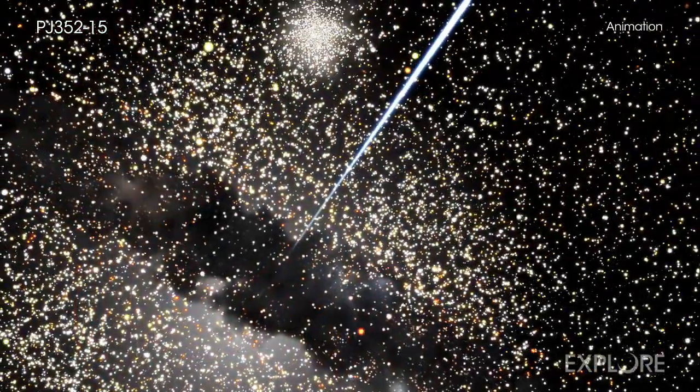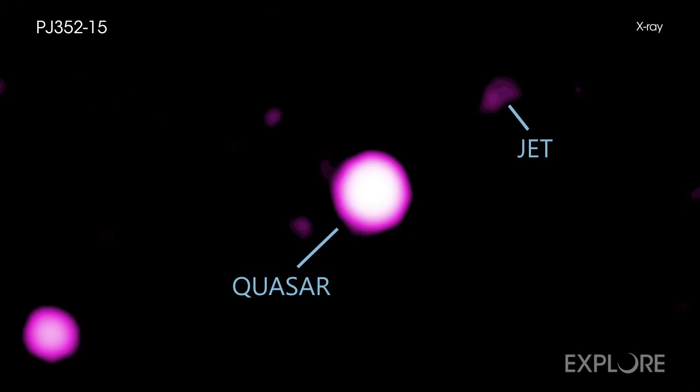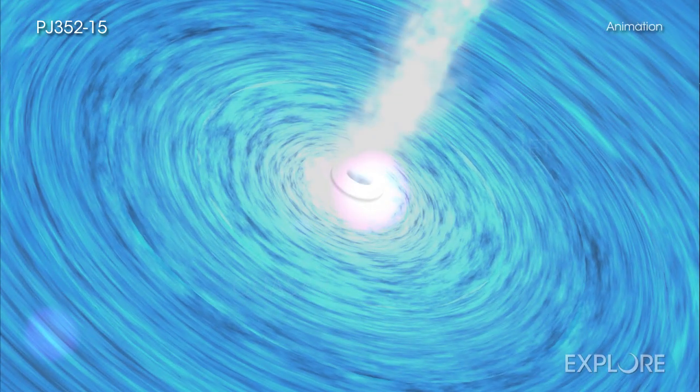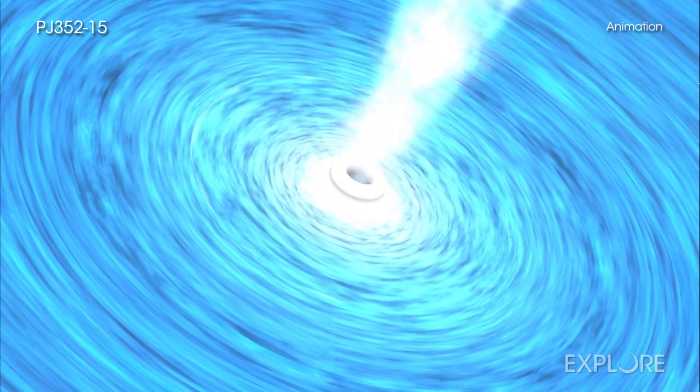The length of the jet is also an important clue in this study. The Chandra data indicates that the jet extends some 160,000 light-years. This gives astronomers a timeline to determine just how long the black hole has been adding bulk during this growth spurt.